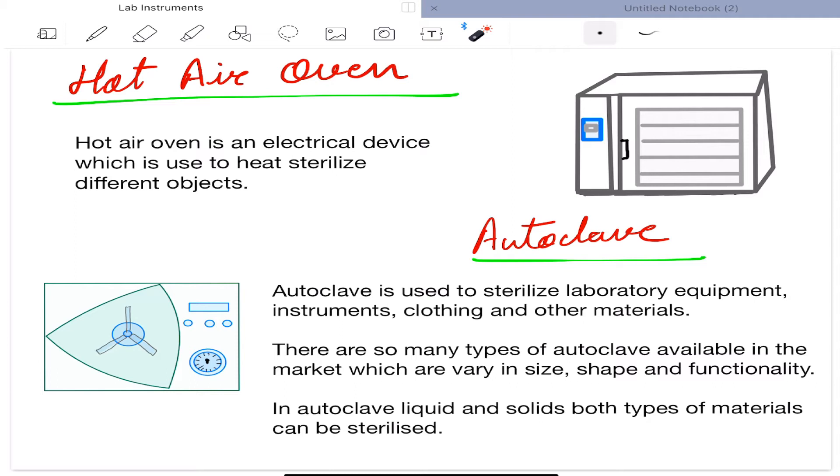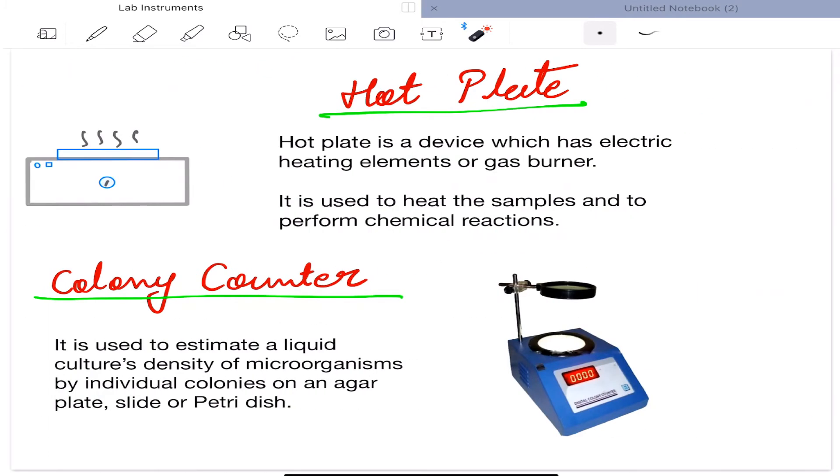Hot air oven is an electrical device which is used to heat sterilize different objects. Next is autoclave. Autoclave is used to sterilize laboratory equipment, instruments, clothing, and other materials. There are so many types of autoclaves available in the market which vary in size, shape, and functionality. In autoclave, liquid and solids both types of materials can be sterilized.